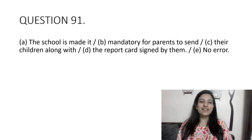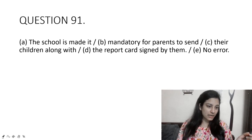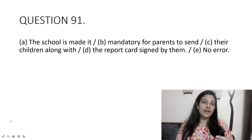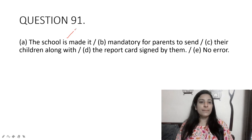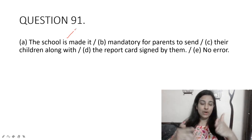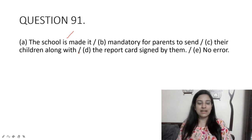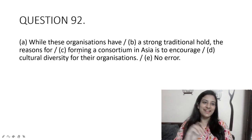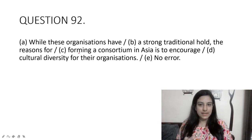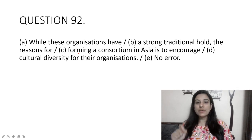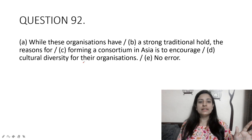The school is made it mandatory for parents to send their children along with the report card signed by them. Here the error is option A — 'school is made it' uses the V3 form 'made,' but it should be 'has made it mandatory.' So the wrong usage of the helping verb is the error here.